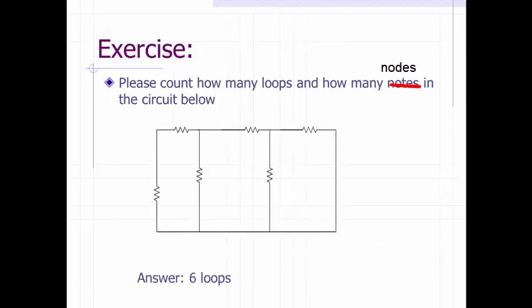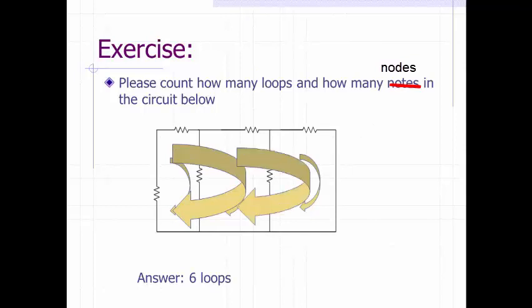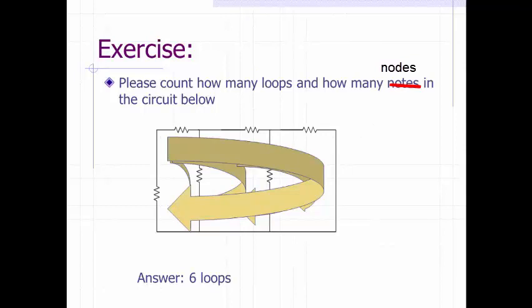The answer is there are six loops. Where are the six loops located? There's one loop here, another loop here, third loop, fourth, fifth, and sixth.